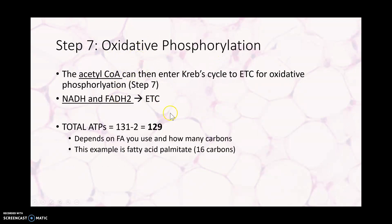Step seven is oxidative phosphorylation, which we talked about in the last lecture. The acetyl-CoA enters Krebs, we spin around to get NADH and FADH2, and then they go to the electron transport chain. The NADH and FADH2 produced directly during beta oxidation also go straight to the electron transport chain. I'm not going to need you to calculate different fatty acid molecules to see how much ATP we're getting — I just want to show you one example.